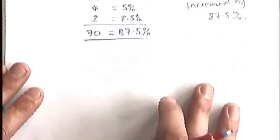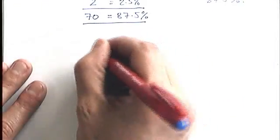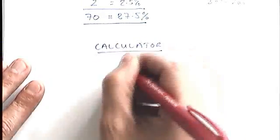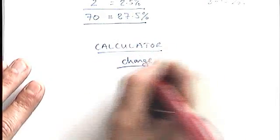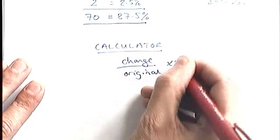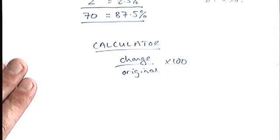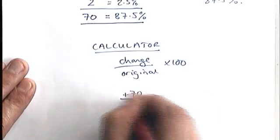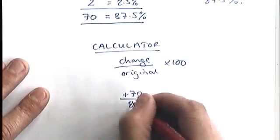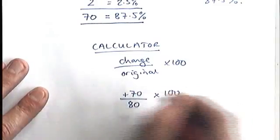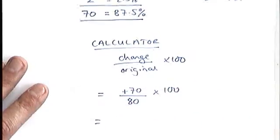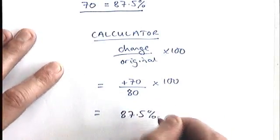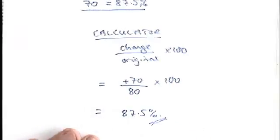Probably you would use a calculator for this one, so let's just make sure that we can use the calculator method. With a calculator, you would be writing in the change divided by the original times 100. The change in this case was 70. The original amount was 80. If you times that by 100, you should get 87.5%.